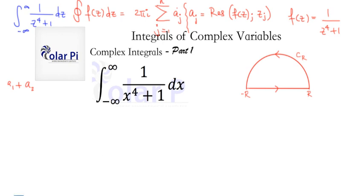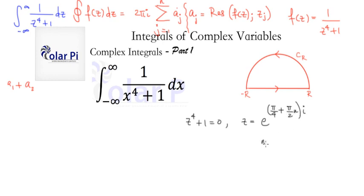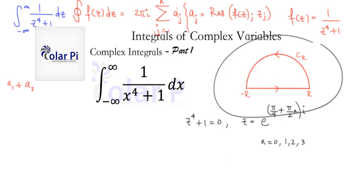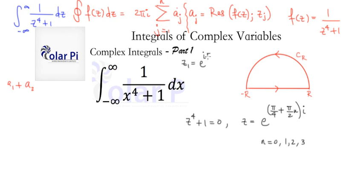Our singularities are going to be where the denominator of f(z) equals zero, meaning we need to find where z to the fourth plus 1 equals zero. And z to the fourth plus 1 will equal zero if z equals e to the (π/4 + πn/2)i for n equals 0, 1, 2, and 3. This has four singularities, but we're only interested in two of them — n equals 0 and n equals 1 — because those are the only ones enclosed by our contour. So z₁ equals e to the i times π/4, and z₂ equals e to the i times 3π/4.